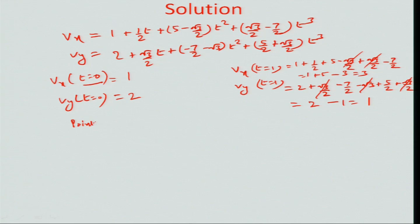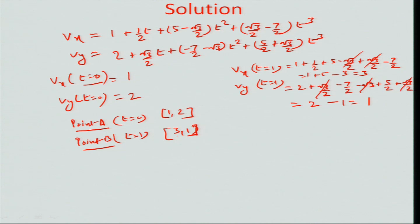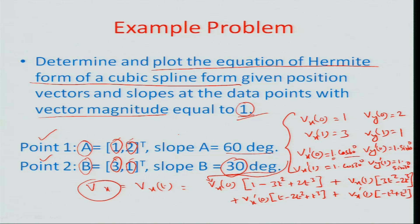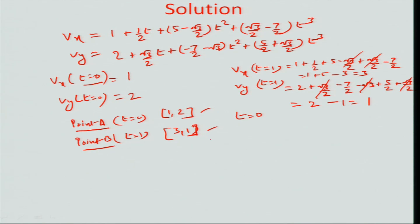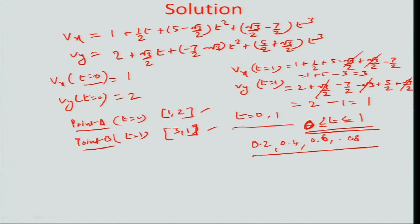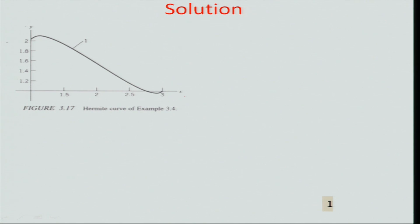This confirms the end conditions: point A at t = 0 has coordinates (1, 2) and point B at t = 1 has coordinates (3, 1), which matches our initial setup. So the fit correctly yields the endpoint data. For t varying between 0 and 1 in increments of 0.2, we can evaluate the equation to interpolate the curve and produce a good fit between the two points.